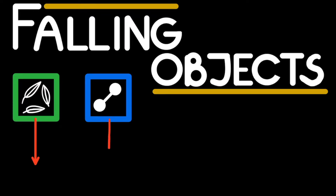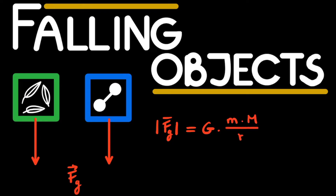We also know that objects are pulled towards the ground under the force of gravity, and that the magnitude of this gravitational force is proportional to the mass of the object. Therefore, the force of gravity pulls harder on heavier objects. And this raises the following question: if gravity pulls harder on heavier objects, why is it that both objects still accelerate towards the ground at the same rate and thereby reach the ground at the same time?